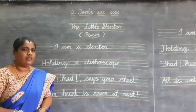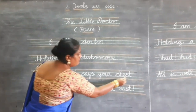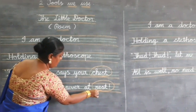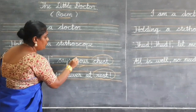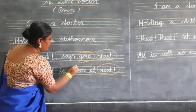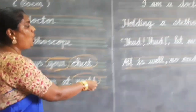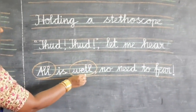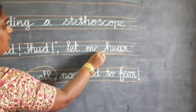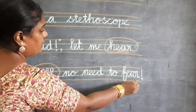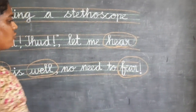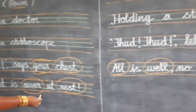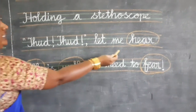Children, tell me a few rhyming words in the poem. Chest: C-H-E-S-T. Rest: R-E-S-T. Your: Y-O-U-R. Never: N-E-V-E-R. All: A-L-L. Well: W-E-L-L. Hear: H-E-A-R. Fear: F-E-A-R. Let us recall the rhyming words: chest, rest, never, well, hear, fear.